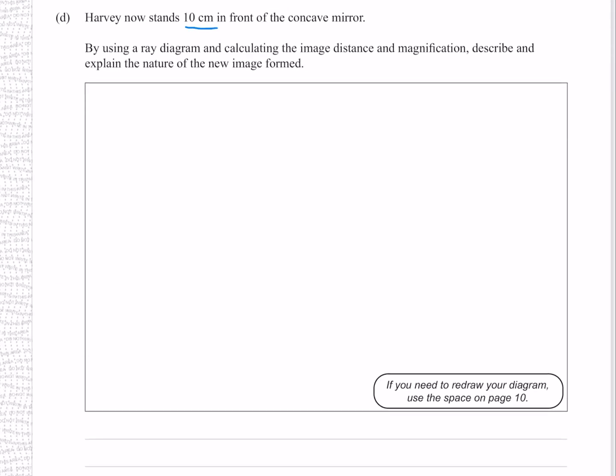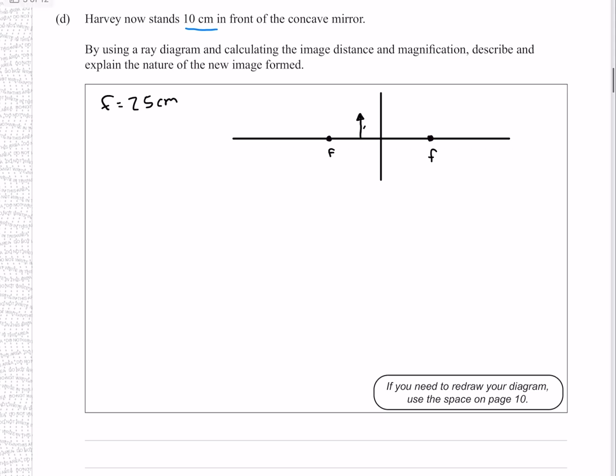Harvey now stands 10cm in front of the concave mirror. By using a ray diagram and calculating the image distance and magnification, describe and explain the nature of the new image formed. We can start by doing a quick ray diagram. We're recalling that our focal length was 25cm, which means that our object is going to be roughly around here. Drawing our rays, the first reflecting symmetrically about the middle, and the second traveling parallel to the axis and then reflecting through the focal. We see that our rays diverge, meaning that to find where they intersect we need to backtrace them. Drawing our virtual rays, giving us a virtual image that is enlarged, upright, and virtual.